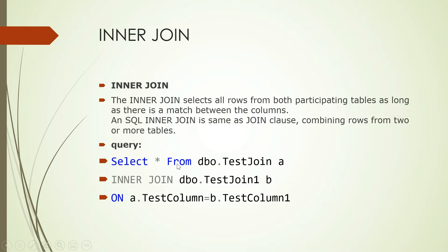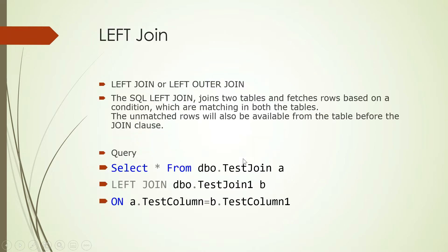For example, when you join a table using inner join, as long as there is a match for the columns, all the results will be displayed. Inner join — as long as a match is found for the condition — it will retrieve the data. Left join, or left outer join, again combines rows from two or more tables based on a condition which are matching on both tables.